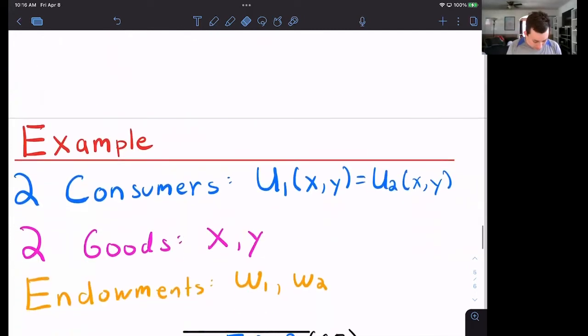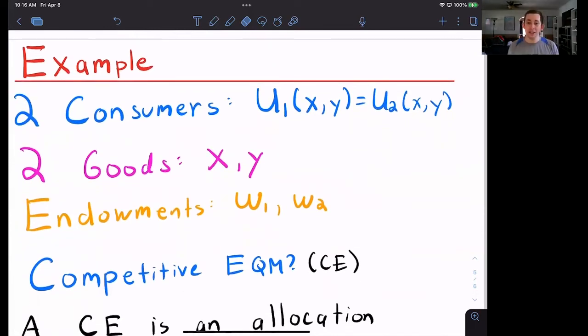Now let's do an example. Here we have two consumers who each have the same utility function. We've got two goods, X and Y. In the morning, both consumers look outside on their front porch and they've got an Amazon box with some X and Y in it. We'll call those endowments. Let's talk about what a competitive equilibrium is in this economy without solving it.